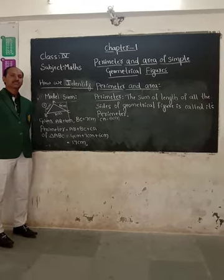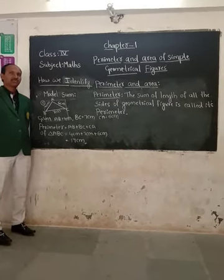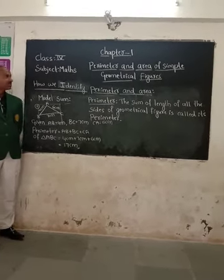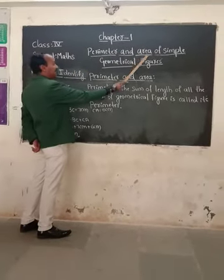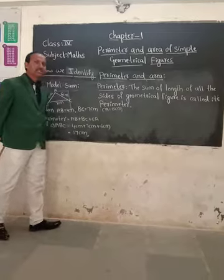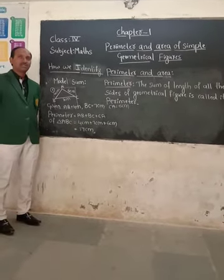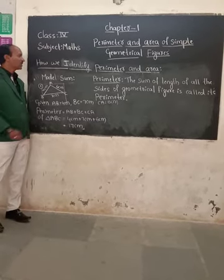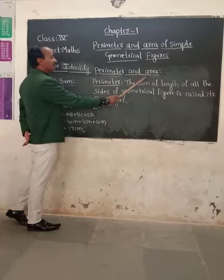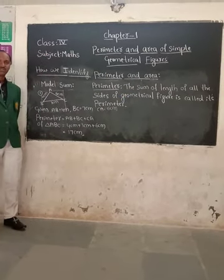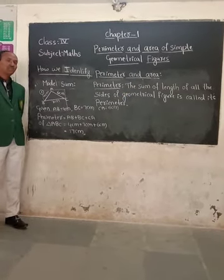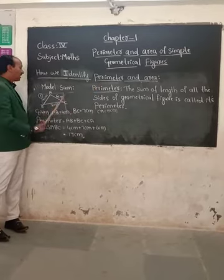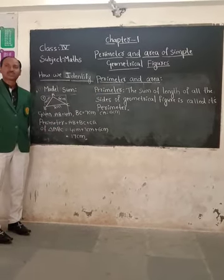Good morning dear students. Yesterday we covered class 4 math, chapter 1 — perimeter and area of simple plane figures. In that study video, I explained how we identify area from plane figures. Now today, I want to teach you how we identify the perimeter of a plane figure.